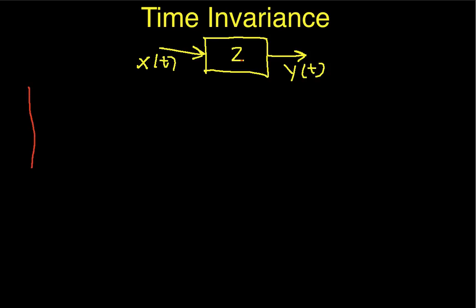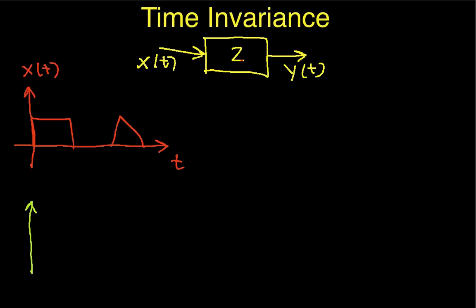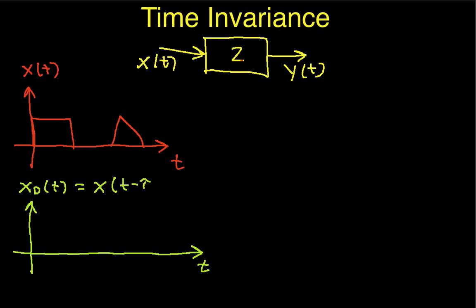That sentence was probably kind of ugly, but it'll hopefully make better sense in just a minute. The input I'm going to use is just an arbitrary thing with a rectangular pulse and then a triangular pulse — mostly just to give us something to look at. And if I delay this, it would look like this. The experiment I'm going to run is pass the undelayed x(t) through, and the delayed version, which I'll call x_d(t), which is x(t − τ). So we're going to delay the input by an amount τ, and the delayed input is going to look like this, where this distance is τ.